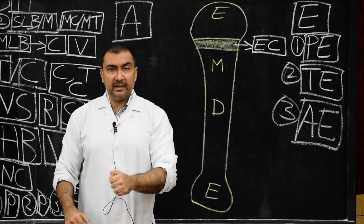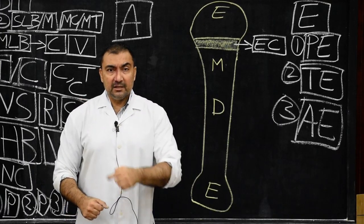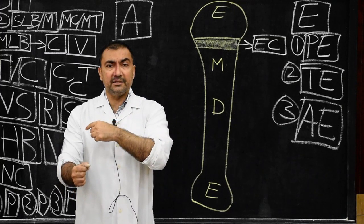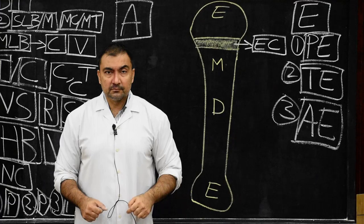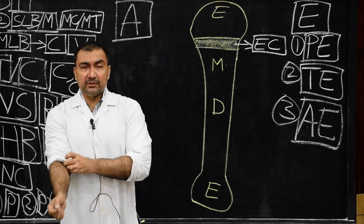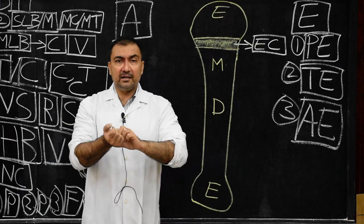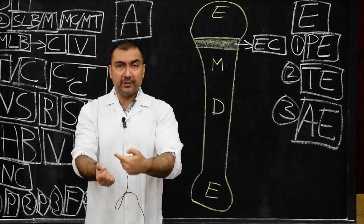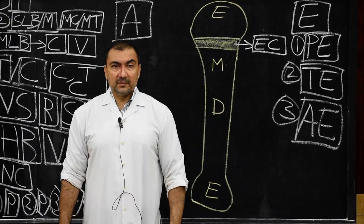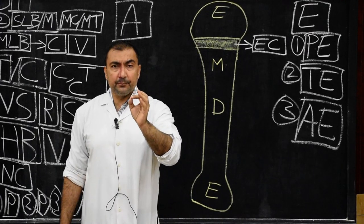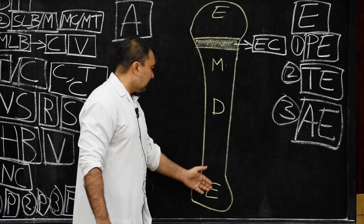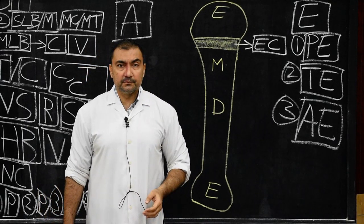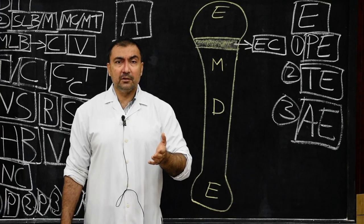In the upper limb, the growing ends are at the shoulder and wrist. The upper end of the humerus is the growing end, so the nutrient canal in the humerus will be directed towards the elbow. The wrist joint is the growing end, so the lower ends of the radius and ulna are the growing ends, and the nutrient canal in radius and ulna will be directed away from the wrist — towards the elbow. These are the important points to remember as typical features of the long bone.